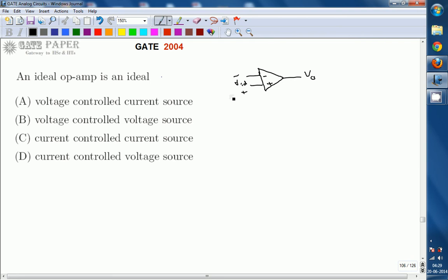VID is the difference input signal. That is V plus minus V minus. Voltage at non-inverting terminal minus voltage at inverting terminal.